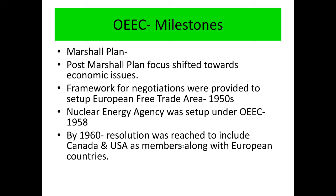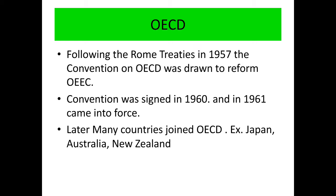By 1960, a resolution was reached to include Canada and USA as members along with European countries. Following the Rome Treaties in 1957, the convention on OECD was drawn to reform OEEC. The convention was signed in 1960 and came into force in 1961, at which point the organization was renamed OECD.